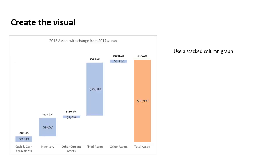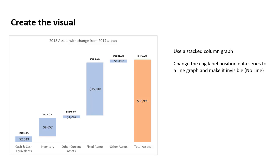We create this visual using a stacked column graph. Once the stacked column graph is created, we change the label-position data series from a stacked column segment to a line graph, then make that line invisible — it doesn't display, but it still allows us to position data labels. The spacer segment is set to no fill and no line, so it disappears, leaving only the visible asset category segments and the total.